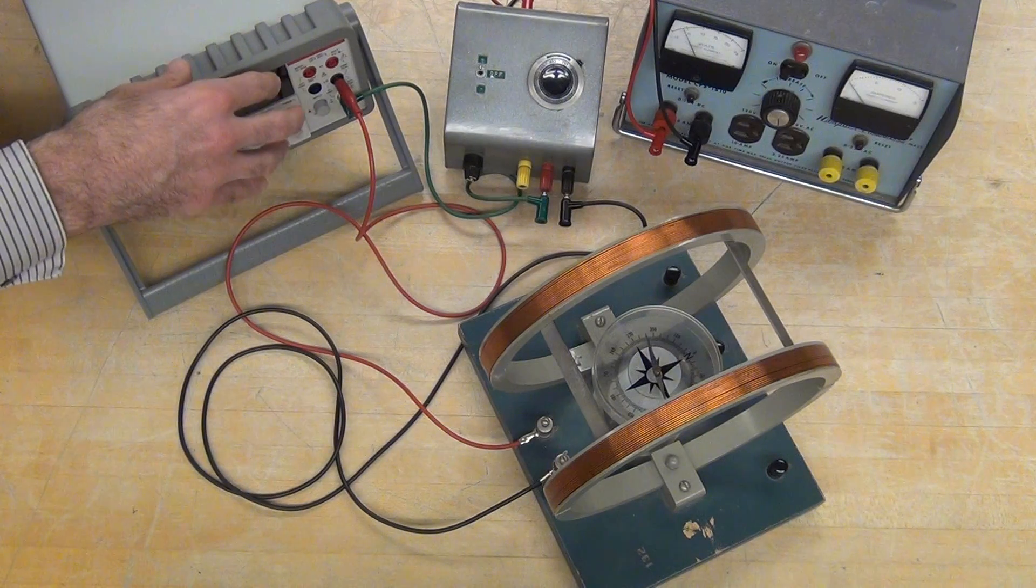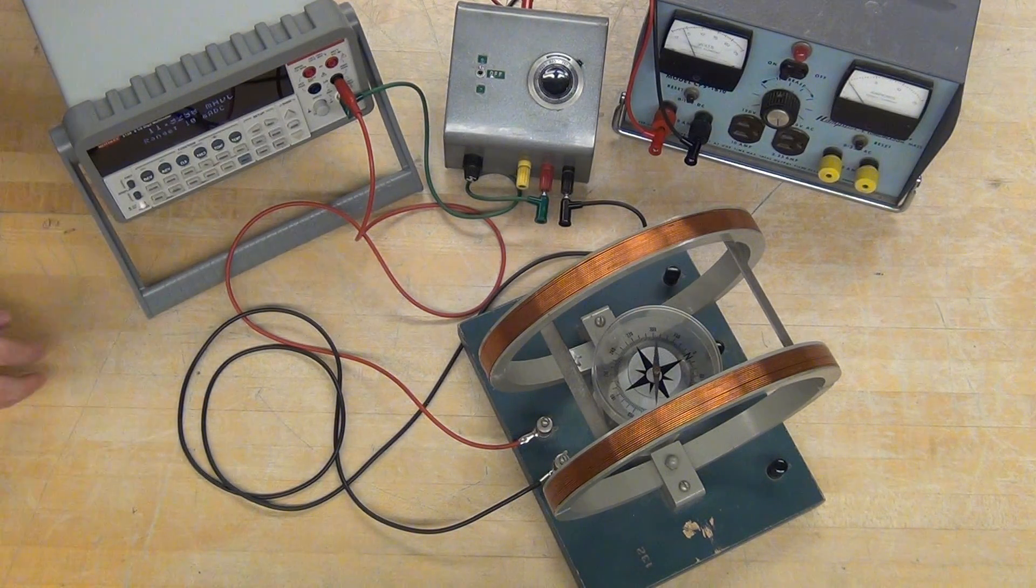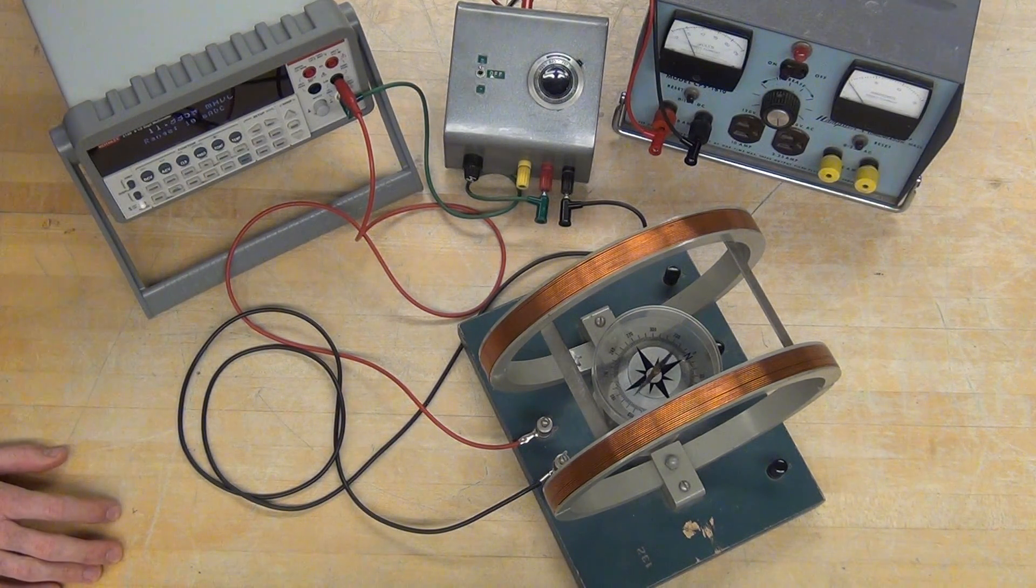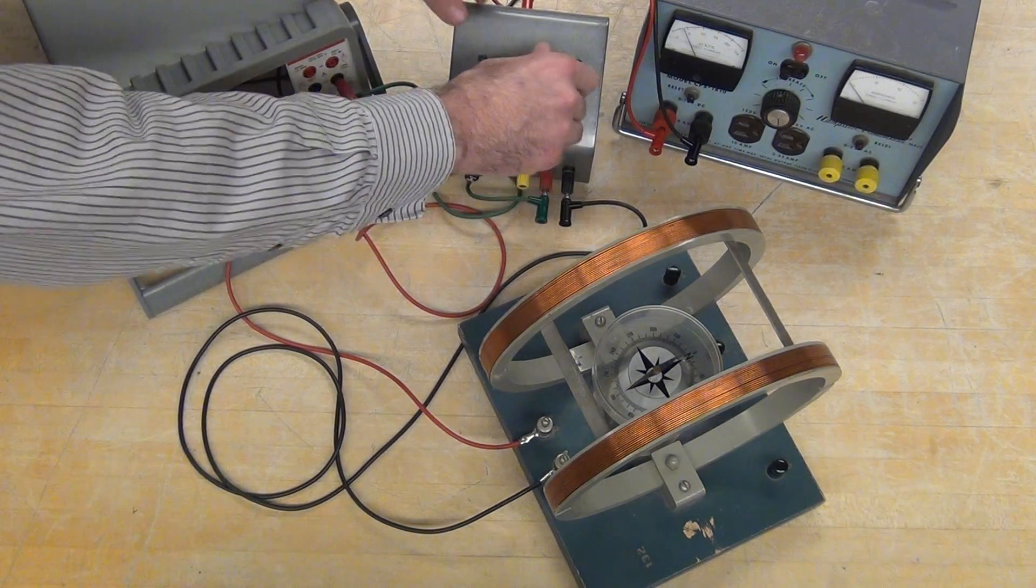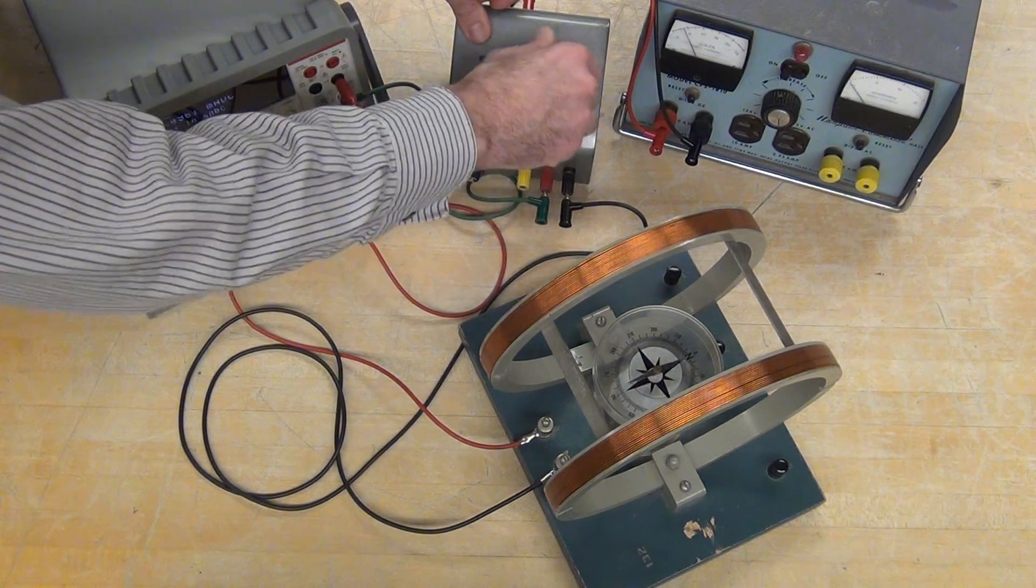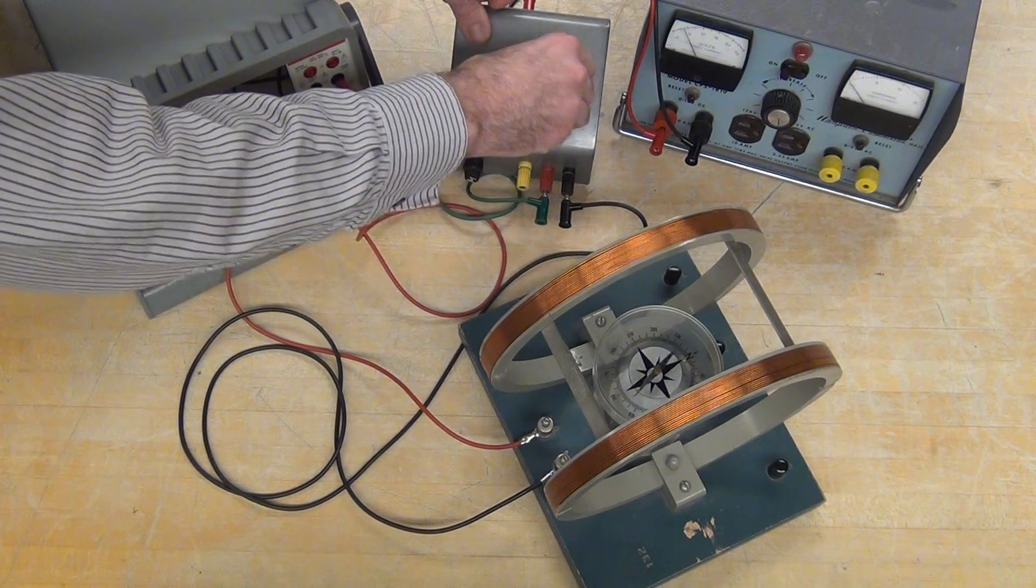Let it settle down, measure the new angle, measure the new current, switch it back to the other side, measure the current and the angle on the other side. Then once you've gone through all of that, you can power everything down.